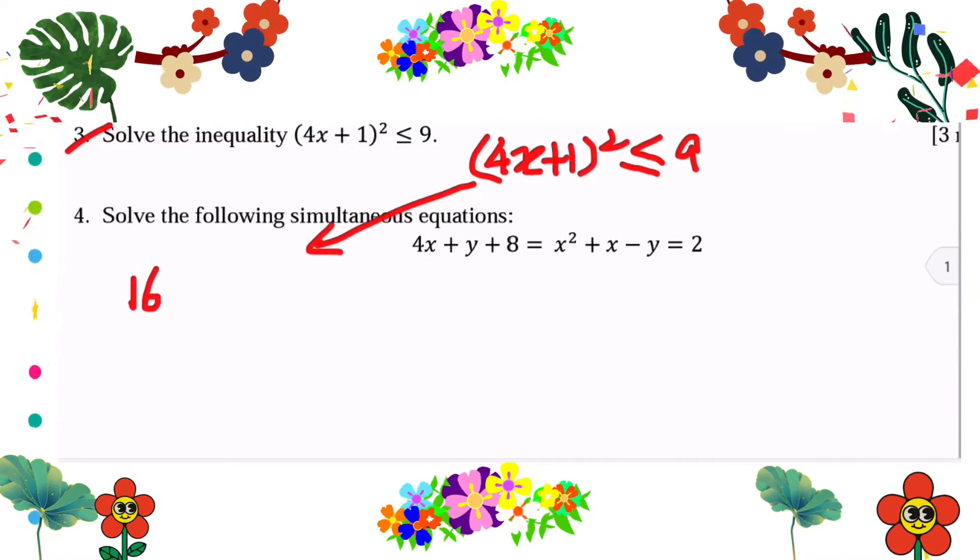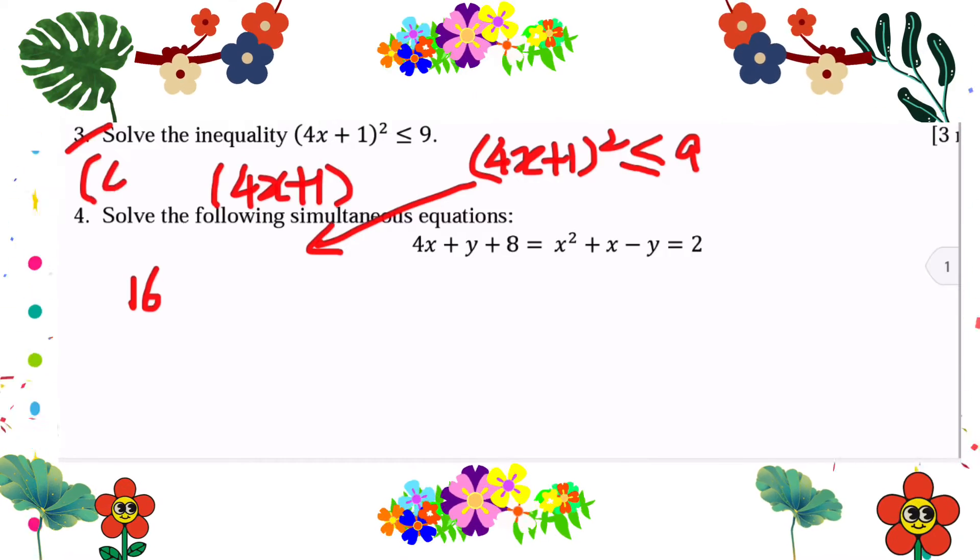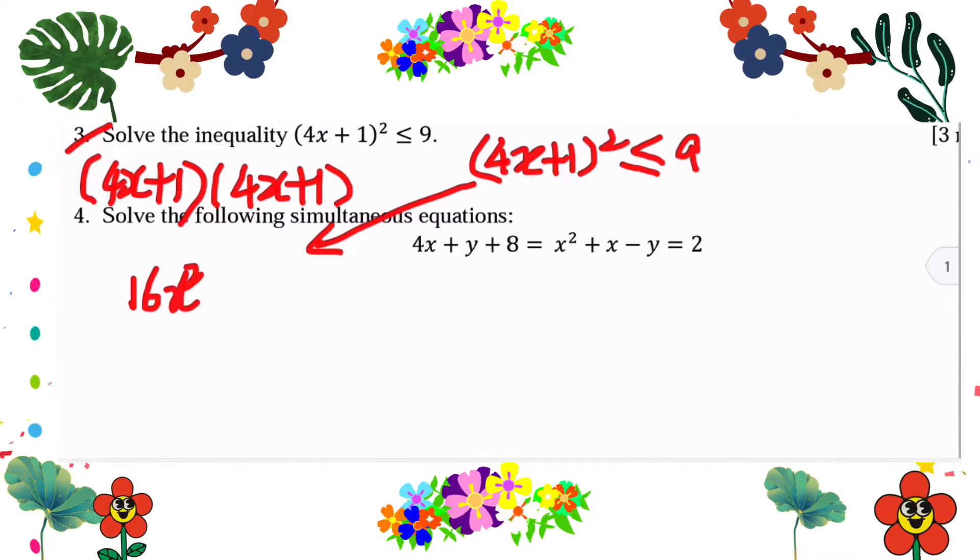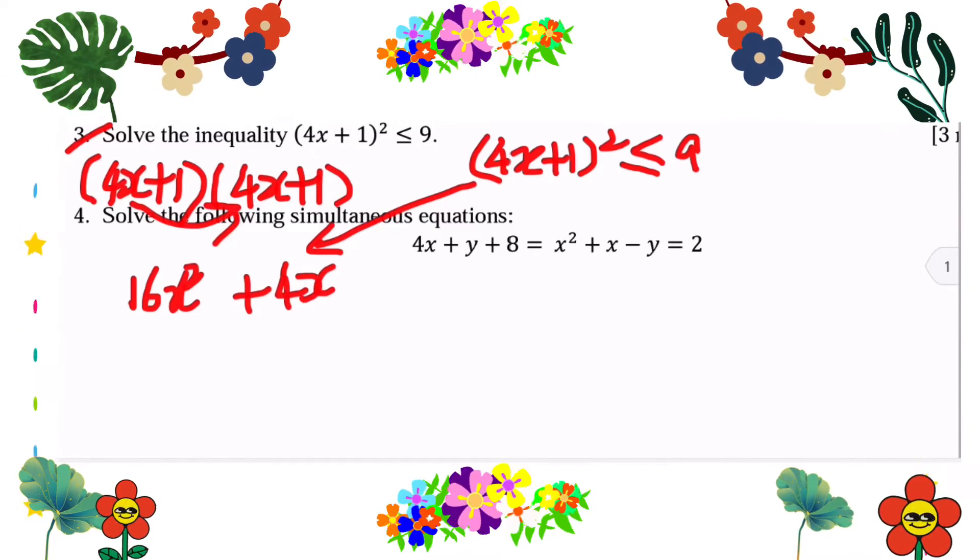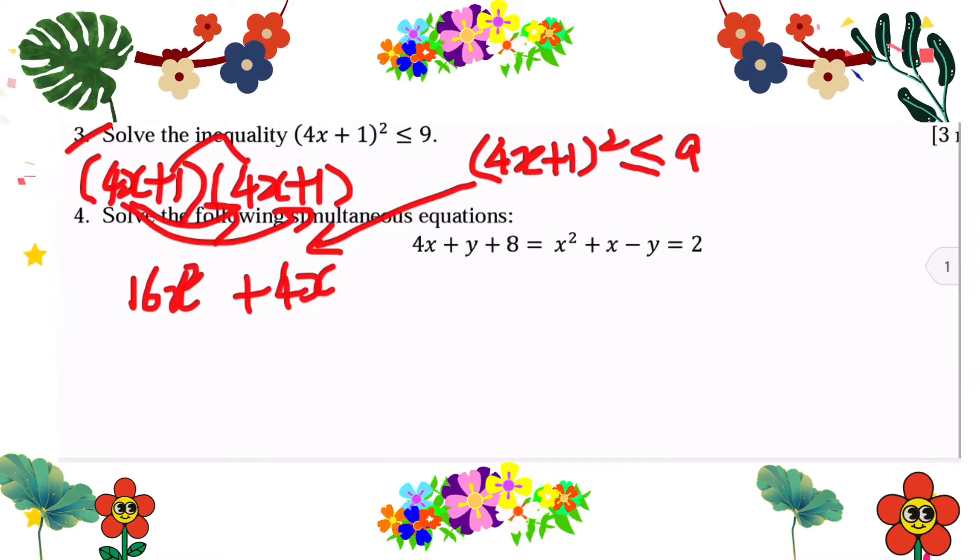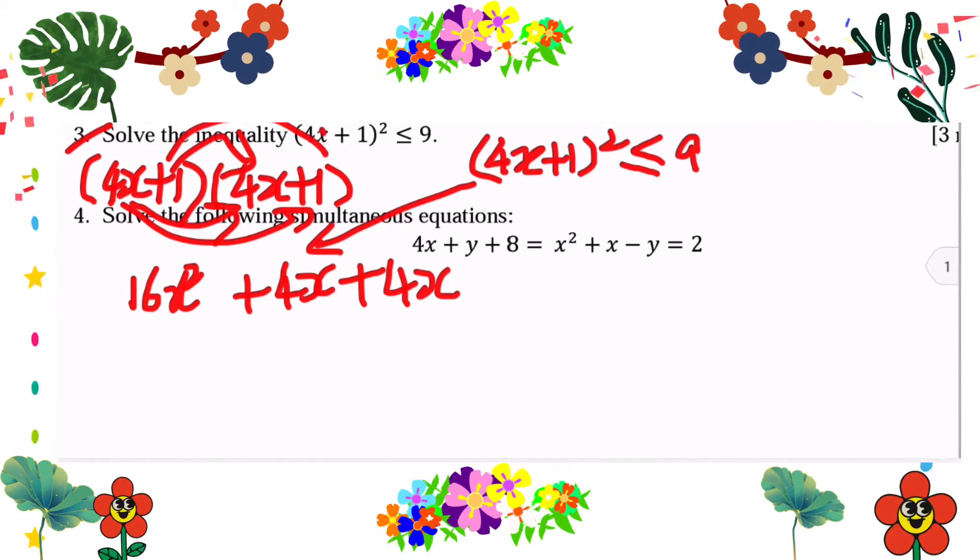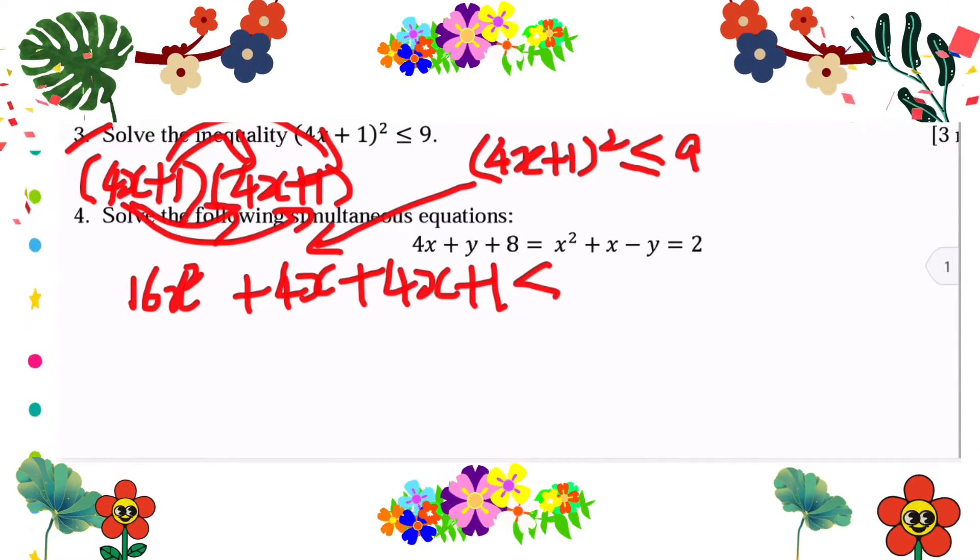(4x + 1)² means 4x + 1 multiplied by 4x + 1. So let's expand: 16x², 4x times 1 is 4x, 4x times 1 is 4x, and 1 times 1 would be 1, less than equal 9.